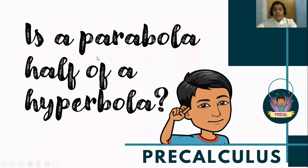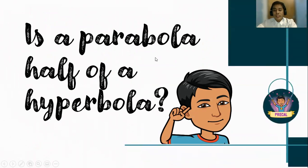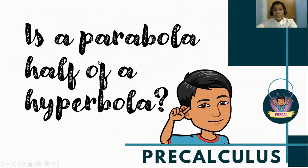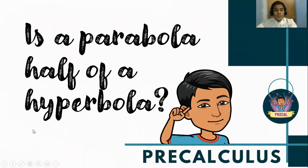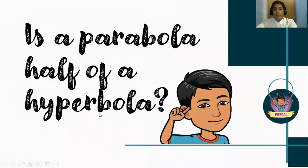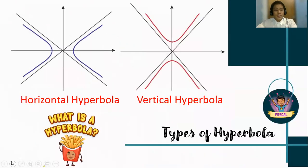Is a parabola half of a hyperbola? It seems that on the graph of a hyperbola, there are two parabolas present. The answer is no. A hyperbola is different from a parabola because a hyperbola is another type of conic. The curve lines you see on the graph are the branches of the hyperbola, and they are not parabolas.